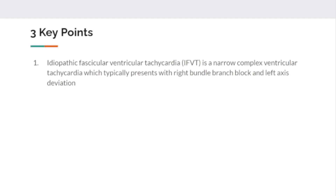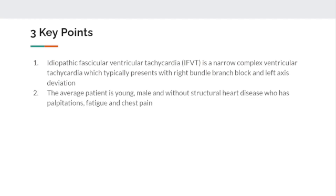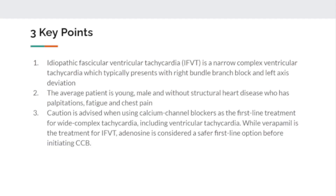Three key points about idiopathic fascicular ventricular tachycardia: First, it is a wide complex v-tach that typically presents with a right bundle branch block and left axis deviation. Second, the average patient is a young male without structural heart disease, presenting with palpitations, fatigue, and chest pain. Third, caution is advised when using a calcium channel blocker as first-line treatment if you're unsure — verapamil is the mainstay, but adenosine is probably the better first choice if the diagnosis is uncertain.